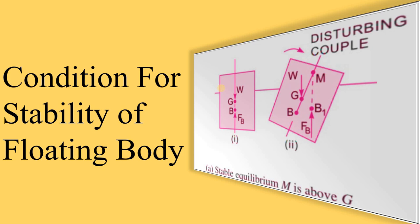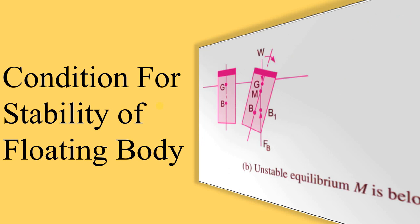Stability means when we apply a small angular displacement to any body, there are three possibilities: first, the body returns to its original position; second, it sinks inside the water; and third, it is displaced to a new position. These three conditions are based on two points — the center of gravity G and the metacenter or metacentric point M.